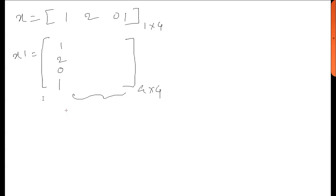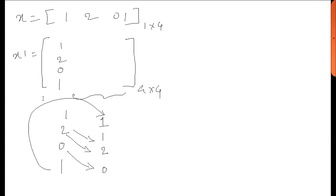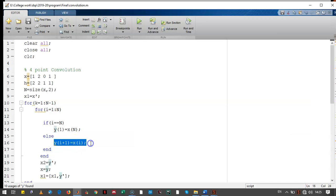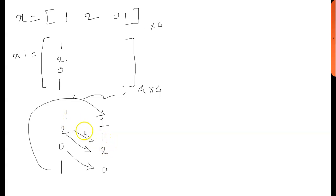The signal is [1, 2, 0, 1]. This 1 needs to come over here, this 2 needs to come over here, and this 0 needs to come over here — so it will look like [1, 2, 0]. This 1 needs to go up. In the program, this line does this operation: this 1 comes over here, this 2 comes over here, this 0 comes over here. That means y(n+1) will be assigned as x1(n) — the current value is assigned to the next position.